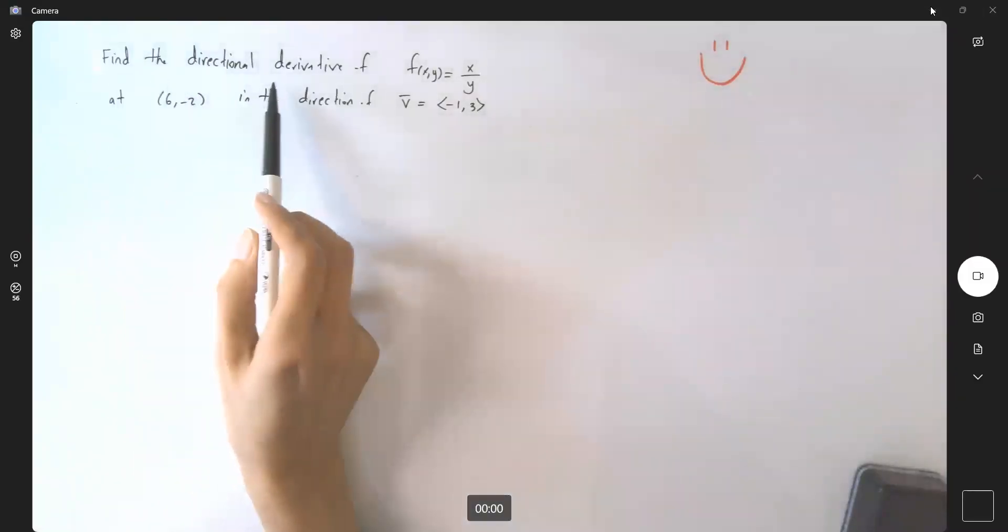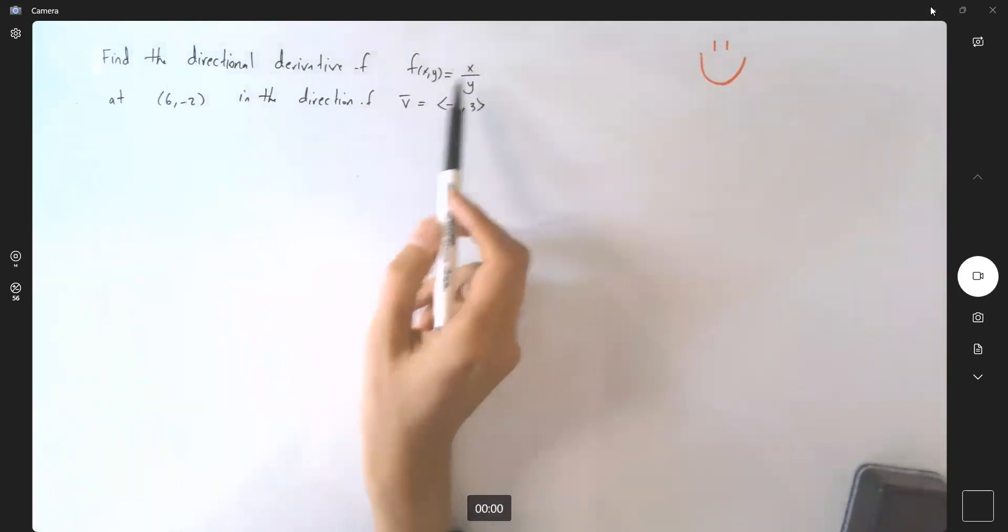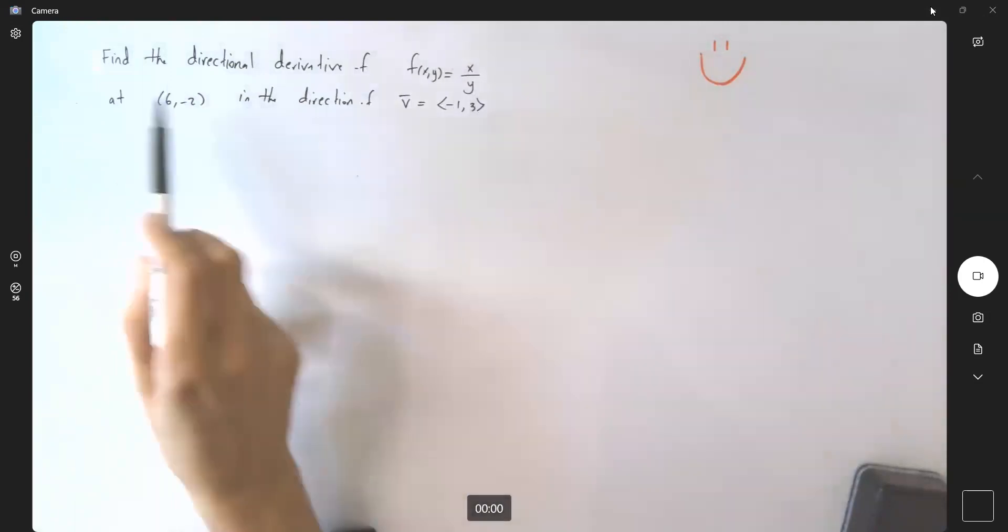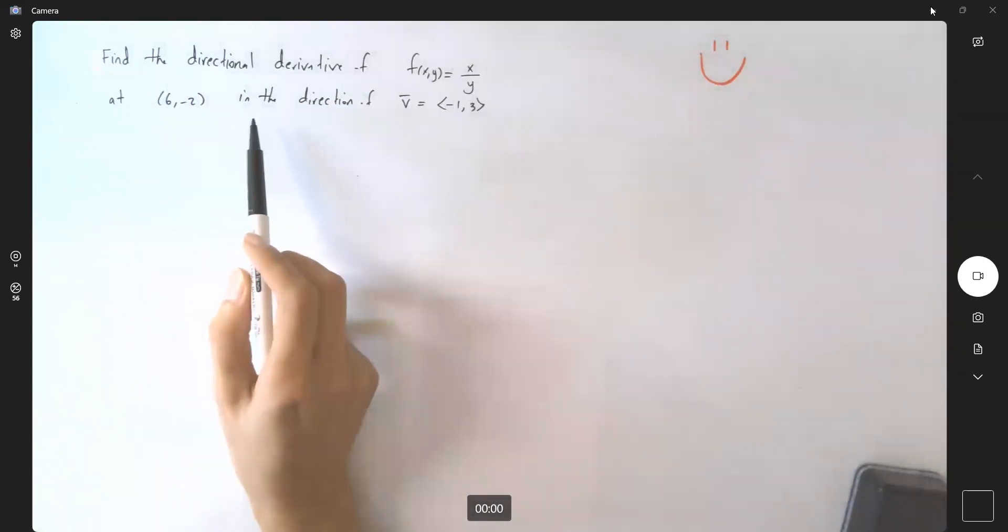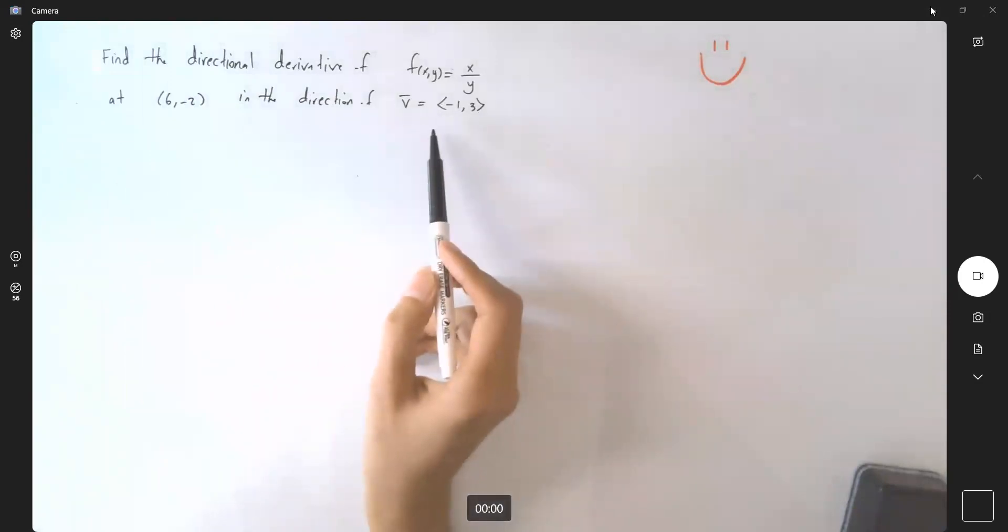Suppose the question says, find the directional derivative of function x divided by y at the point (6, -2) in the direction of vector v, which is (-1, 3).